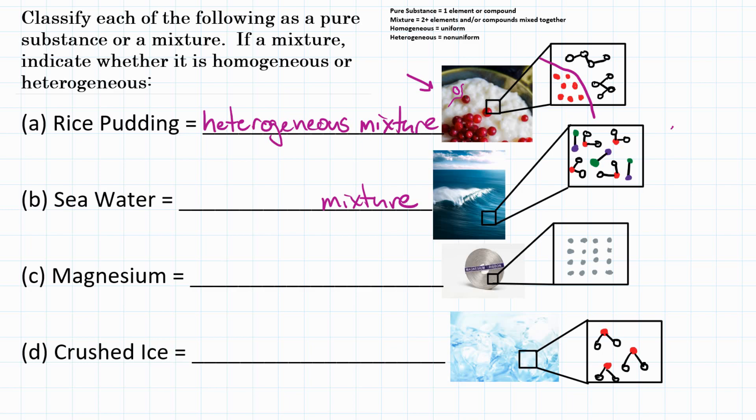So if we zoomed in and looked at the individual particles of saltwater, we would see some water molecules. We would see some salt molecules. So we would again know that it is a mixture of different things. But then looking to see how mixed up they are, we would see that they're evenly spread out. They're evenly mixed.